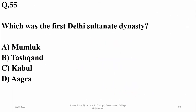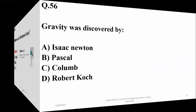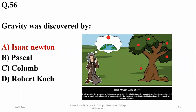Which was the first Delhi Sultanate dynasty? It was the Mamluk dynasty, which ruled from 1206 to 1290. It was the first of five unrelated dynasties to rule as the Delhi Sultanate, until 1526. So alpha is the right option. Gravity was obviously discovered by Sir Isaac Newton, and the right option is alpha.